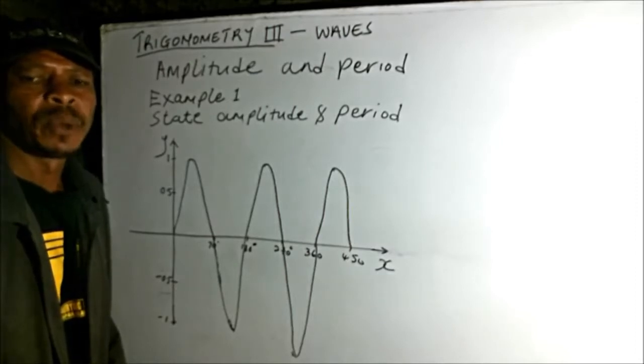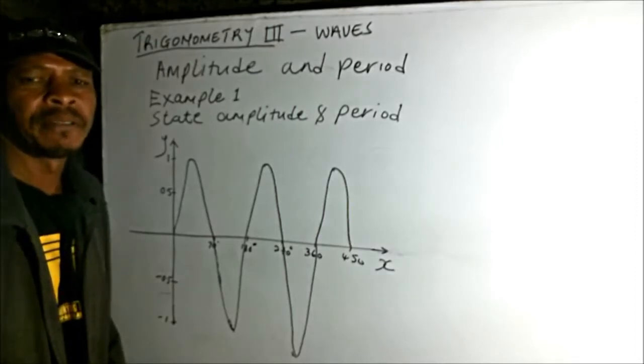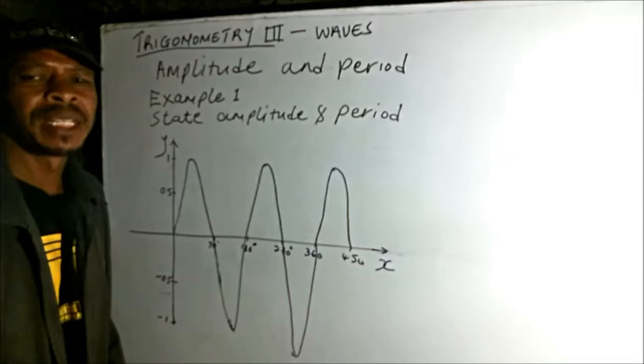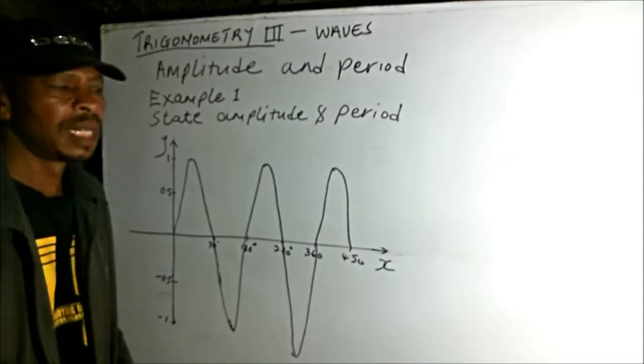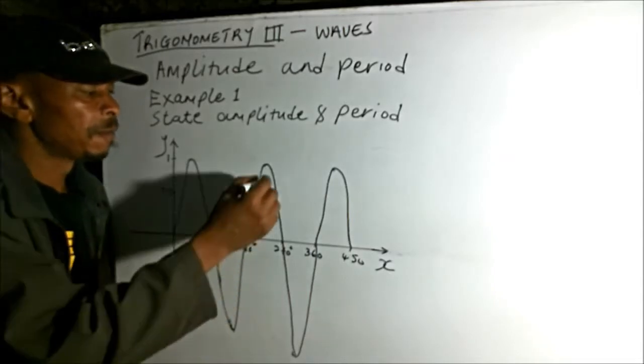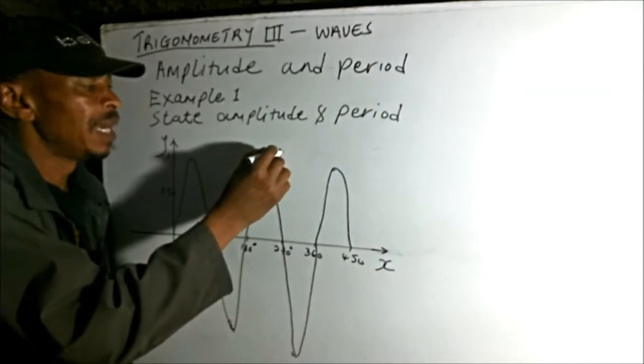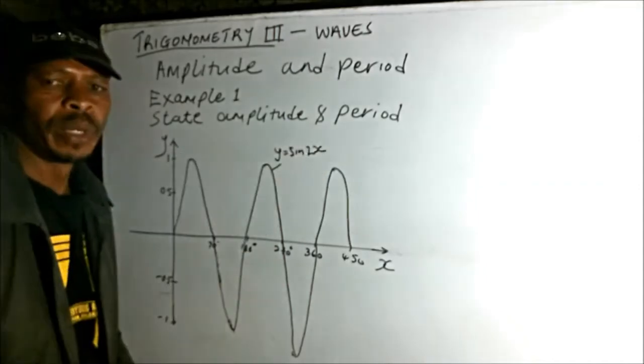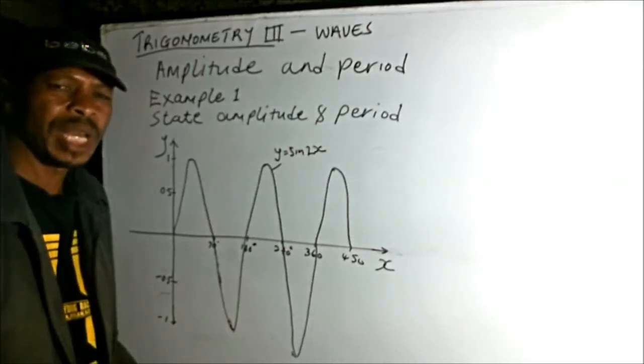Here is our Example 1. Already I have plotted a sketch of the wave. We are told to state the amplitude and the period. This is the wave of y equals sin 2x. That is the function of our wave.